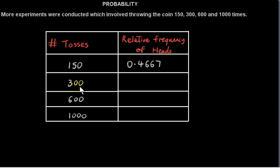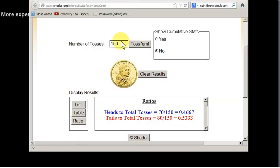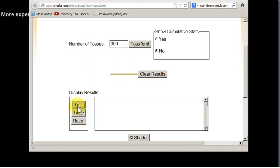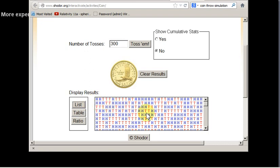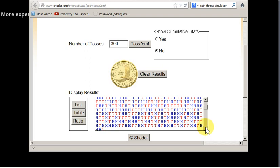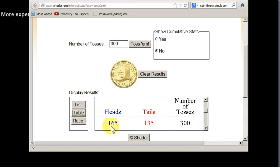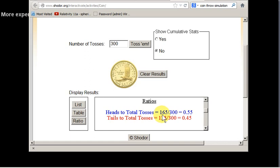Now let's repeat the experiment for 300 tosses, effectively doubling the number of tosses. We can get a list of results of 300 tosses. We can bring up a table to get the frequency of heads. And if we click on ratio, we can get the relative frequency of heads to total tosses, which is 0.55.